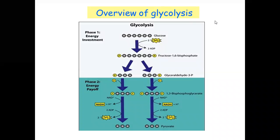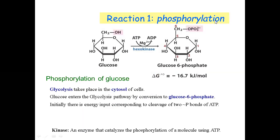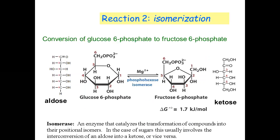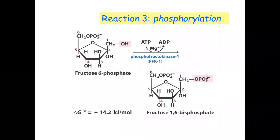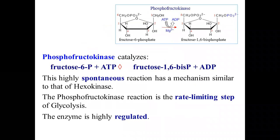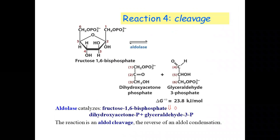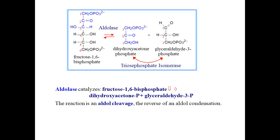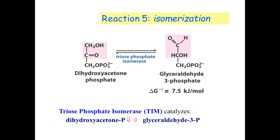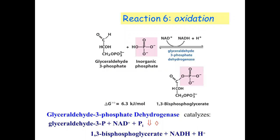Let's overview from the last lecture. We discussed about a total of five reactions of glycolysis. The first one was phosphorylation; we talked about the enzyme hexokinase. Then isomerization, then phosphorylation again — and we talked about phosphofructokinase, the rate-limiting steps. The fourth was cleavage, and then isomerization again. Now we will continue our lecture from oxidation.